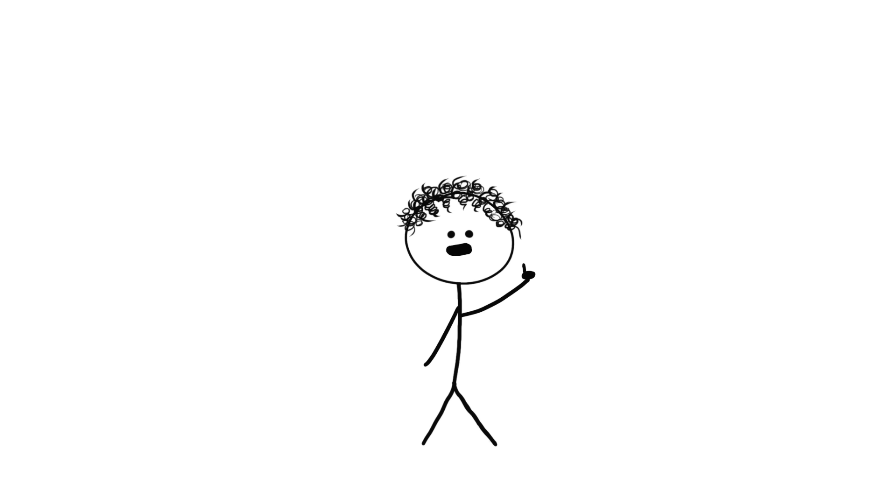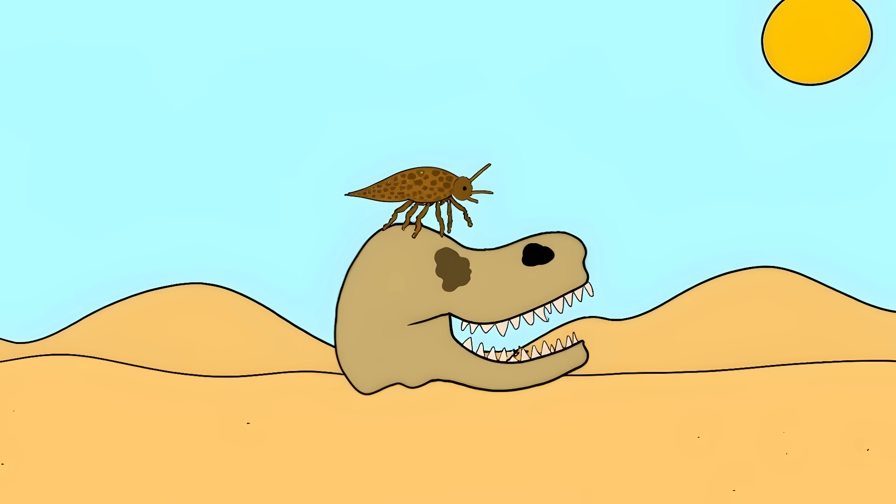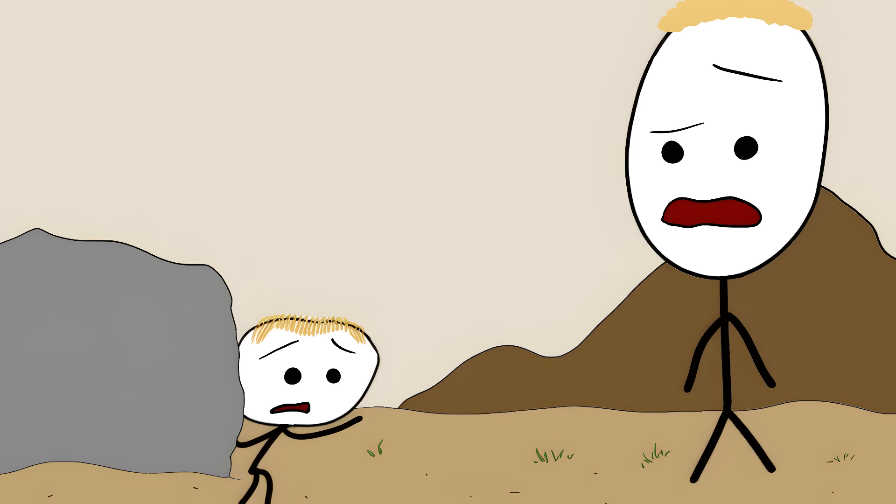Or look at bacteria. These tiny things can survive in boiling hot springs or frozen lakes. They're not winning any strength contests, but they're masters at adapting to their environment. Cockroaches outlived the T-Rex for a reason. Sometimes being small, sneaky, and good at hiding is fitter than being big and strong. It's not about being the strongest. It's about being the best at not dying in your particular situation. 7.